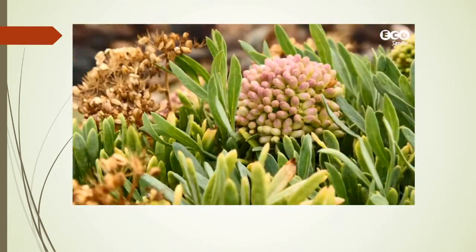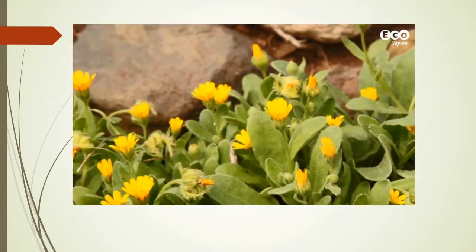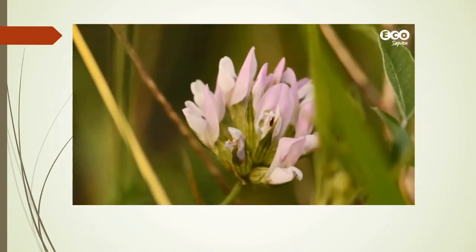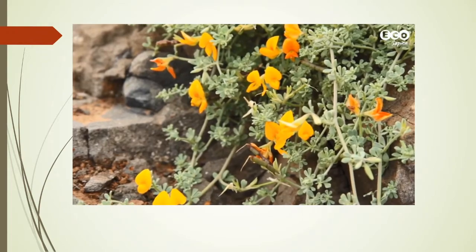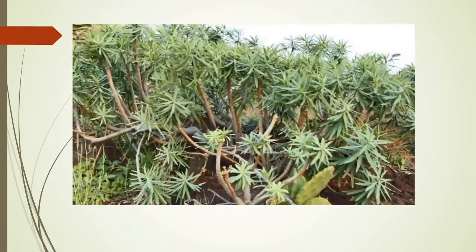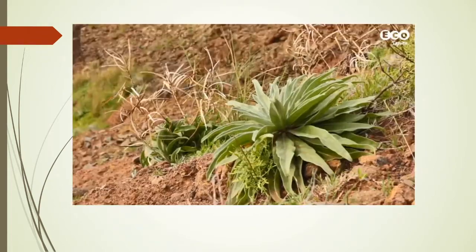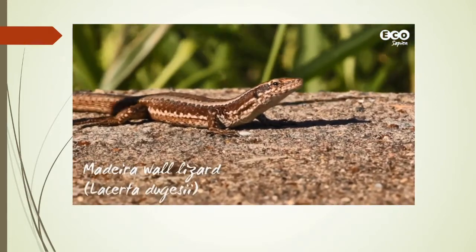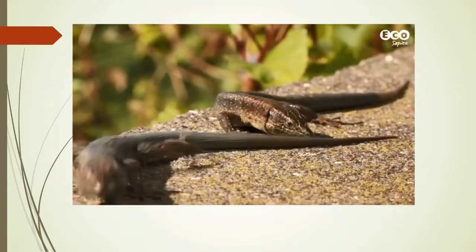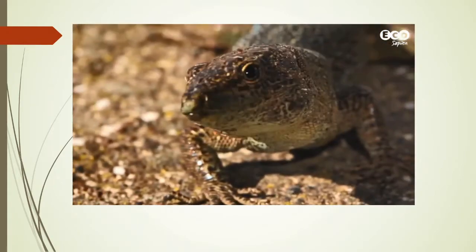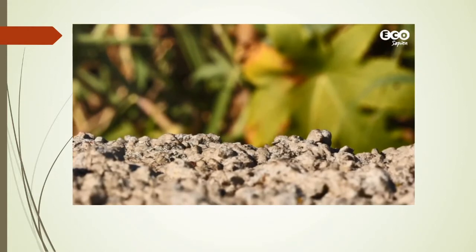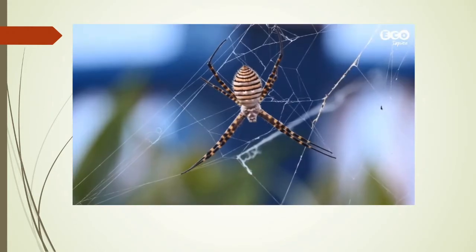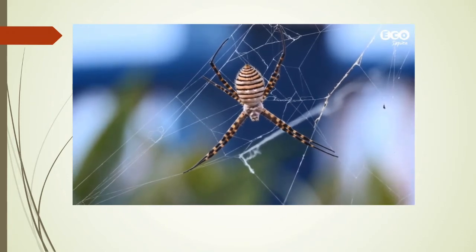Madeira is often referred to as the floating garden, and no wonder. For an island only 801 square kilometers in area, it's home to over 760 species of plant — 140 of which are endemic. The island is also home to an endemic lizard, which is actually very common and can be found on most walls and rock faces around the island. So why does Madeira have so many endemic species? Let's look at the ecological processes involved.